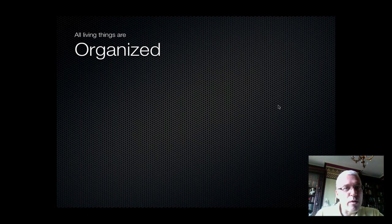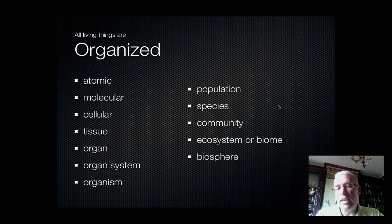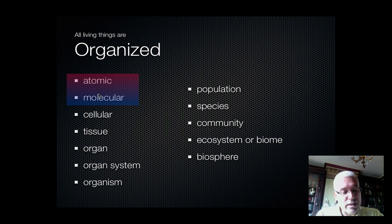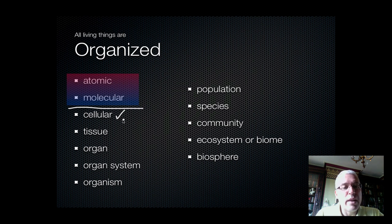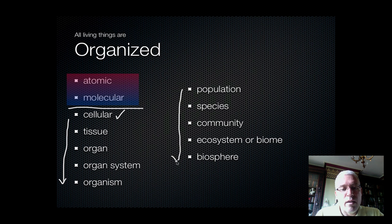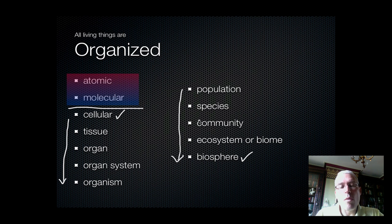All living things are organized, which means they're put together in a way that's not random. Organization is best studied using levels of organization. The first two levels — the atomic level and the molecular level — are not alive; this is the area frequently studied by chemists and physicists. It isn't until you get to the cellular level of organization that you've gotten complex enough to be considered alive. As you move down the list towards the biosphere, you're getting larger and more complex, until you arrive at the biosphere level, which is the largest and most complex level in all of biology.